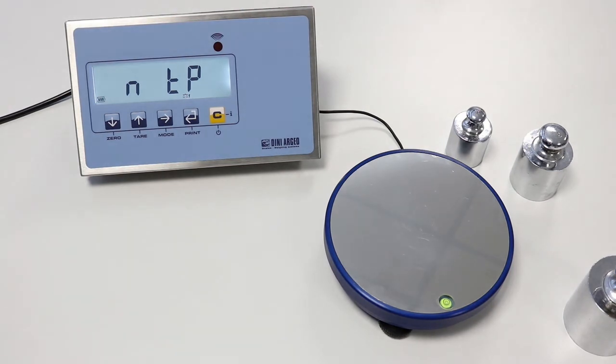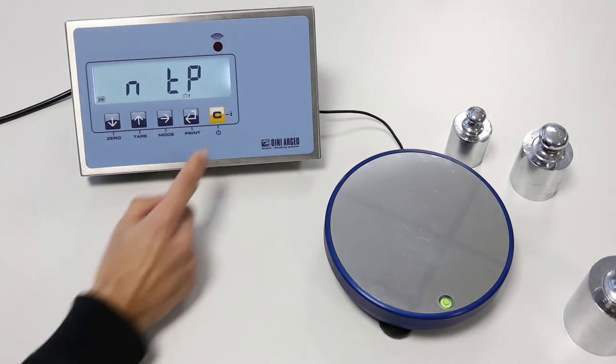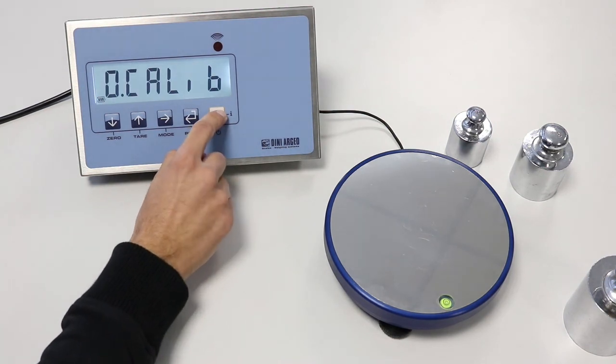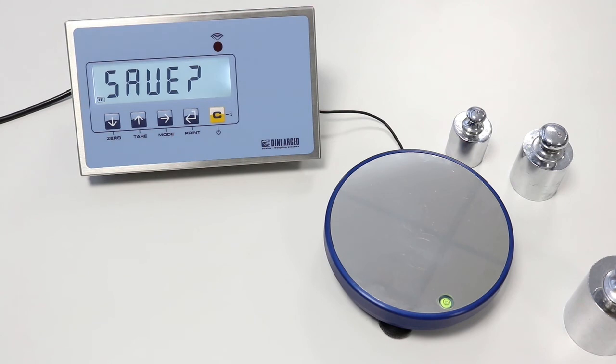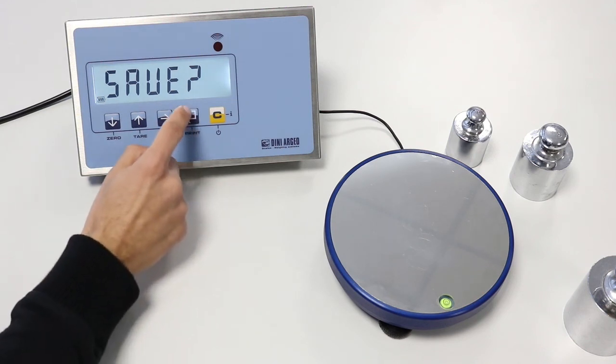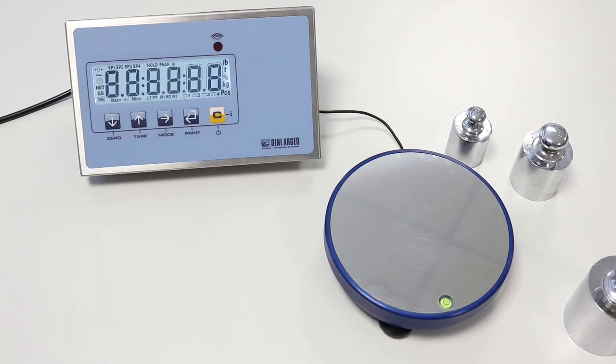To save the calibration, we press the C key many times until the save message will appear. We press PRINT to confirm and store the calibration. The indicator comes automatically into weighing mode.